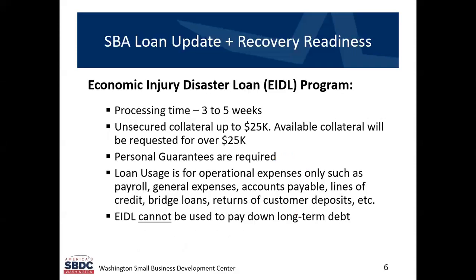Processing time is about three to five weeks, and with the EIDL they break it into two categories. If the economic injury is determined to be $25,000 or less, they will not take any collateral — it's going to be an unsecured loan. If it is over $25,000, they are going to take available collateral from within your business, such as equipment. They will not secure it with real estate because they don't have time to go through the deed and title process. The EIDL is a personally guaranteed loan with specific uses — it can be used for payroll, general expenses, accounts payable, lines of credit, bridge loans, and in some cases to return deposits customers may have made. The EIDL cannot be used to pay down long-term debt or to make any capital purchases like plants or equipment.